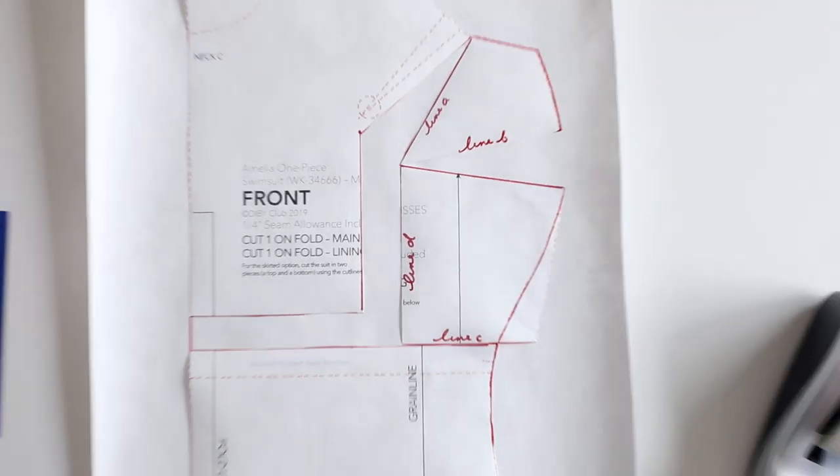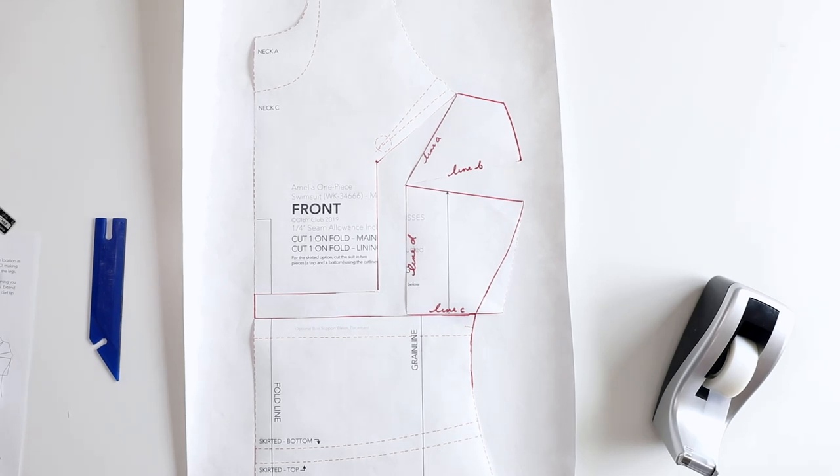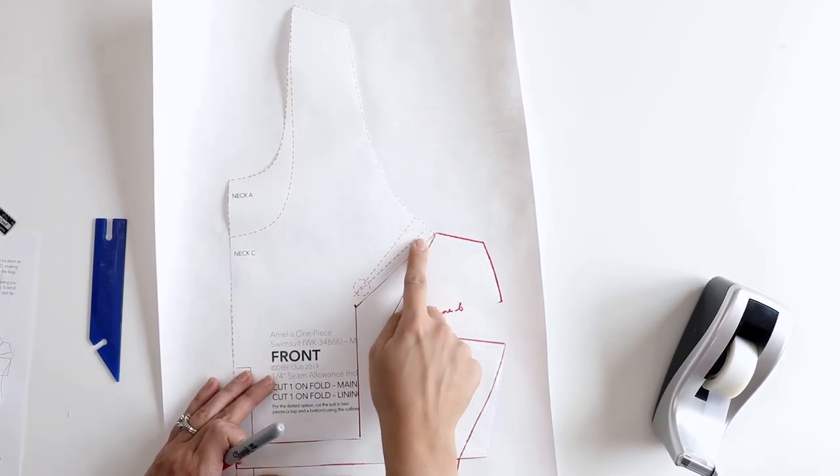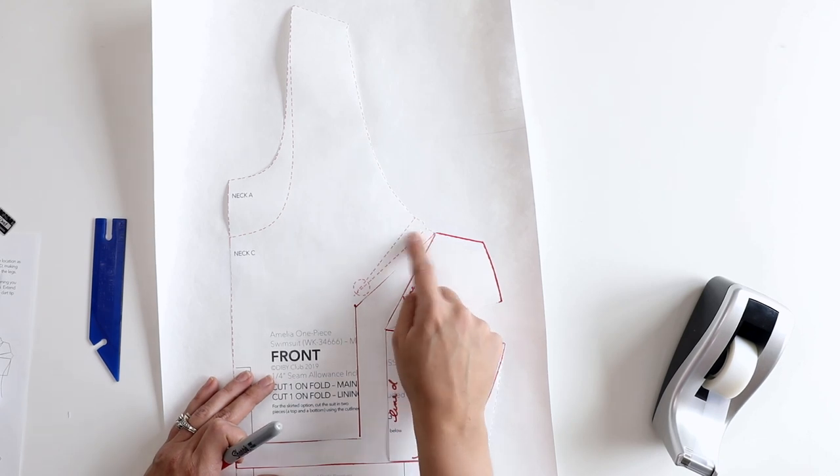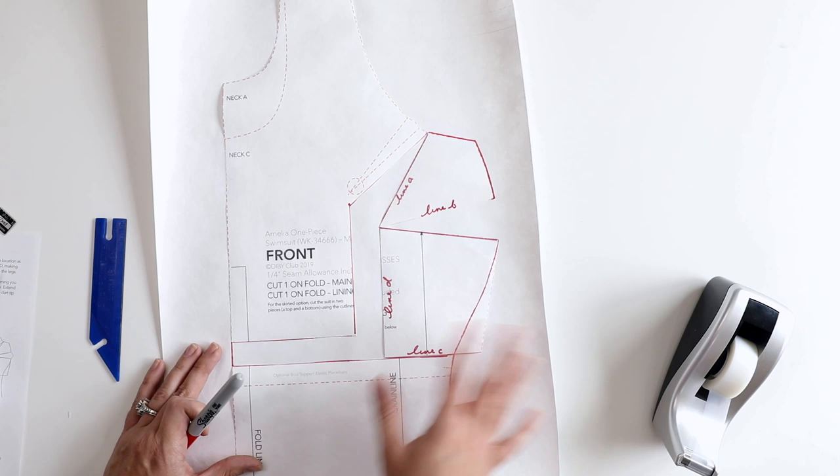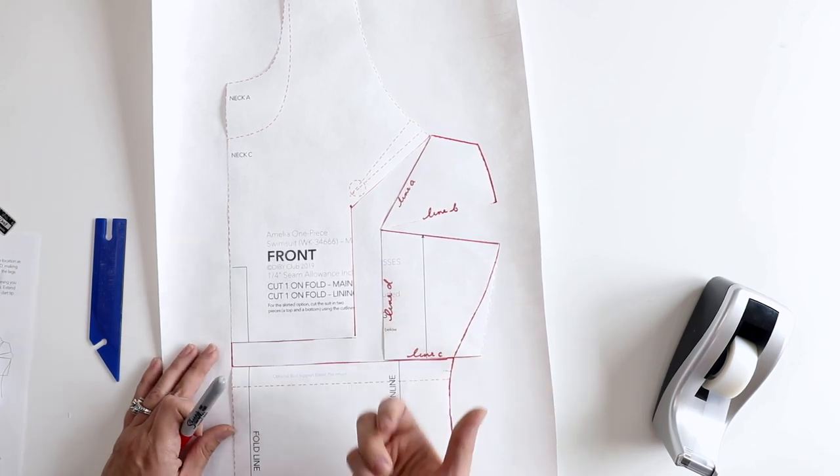Now we have something that looks like an actual pattern. Let's go ahead and zoom out a little bit. There we go. So we have got it all arranged from the base of this arm side dart here. We have got it slashed and spread. We have got some width and some length added in.